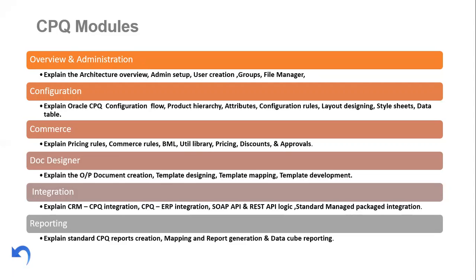In the Overview, I'll cover the architecture — not the front-end user architecture, but the backend architecture: how the Oracle CPQ product was developed, what technologies were used, how the database layer works, and what techniques were used to build the product. For admin setup, I'll cover administration-level activities: how users are created, how groups are managed, and how the file manager works — a complete overview of administration. I'll explain all the keywords in depth in coming sessions.